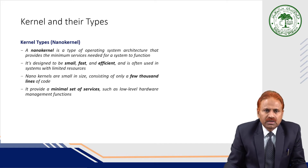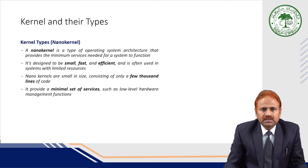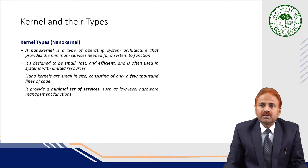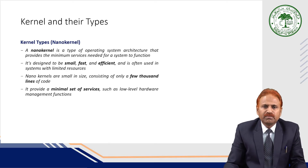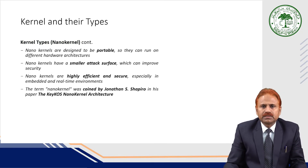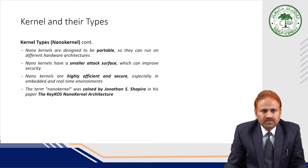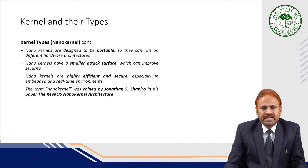Another type of kernel is known as the nano kernel. A nano kernel is a type of operating system architecture that provides the minimum services needed for a system to function. It is designed to be small, fast, and efficient, and is often used in systems with limited resources. Nano kernels consist of only a few thousand lines of code, provide a minimal set of services such as low-level hardware management, are portable across different hardware architectures, and have a smaller attack surface which improves security. Nano kernels are highly efficient and secure, especially in embedded and real-time environments. The term nano kernel was coined by Jonathan S. Shapiro in his paper on the KeyKOS nano kernel architecture.